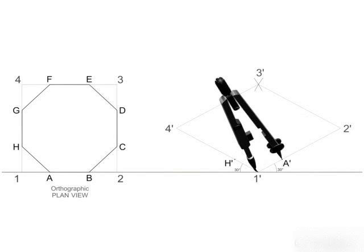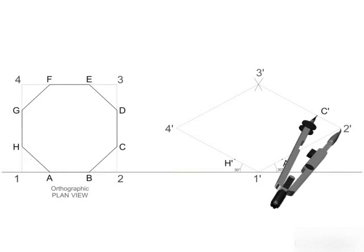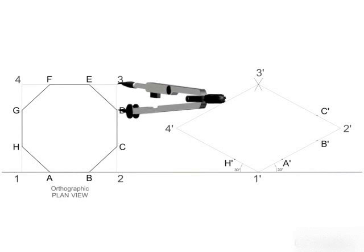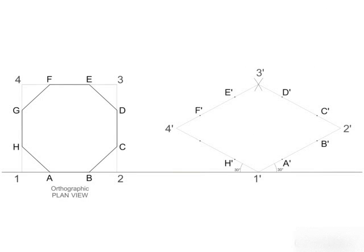Then complete the parallelogram 1 dash 2 dash 3 dash 4 dash. From point 1 dash mark side of the octagon A dash H dash along the isometric axis. Observe the steps carefully. Likewise locate points F dash and G dash.